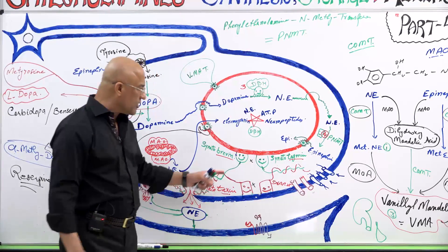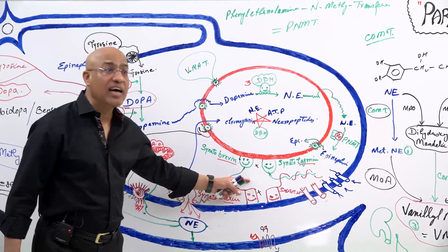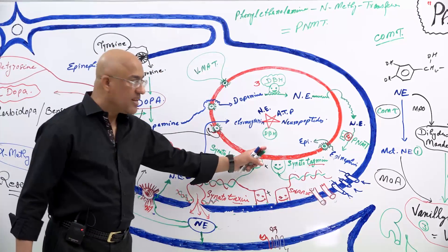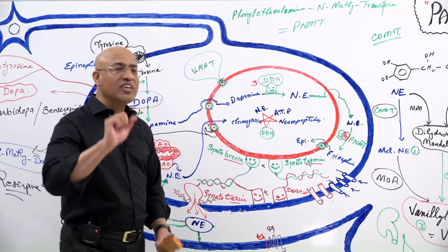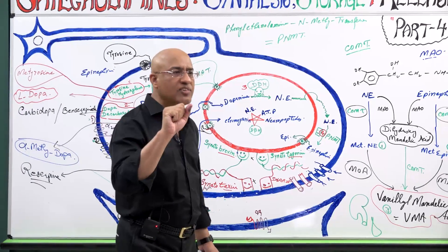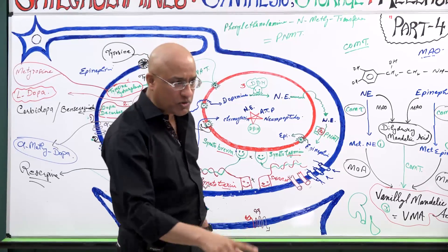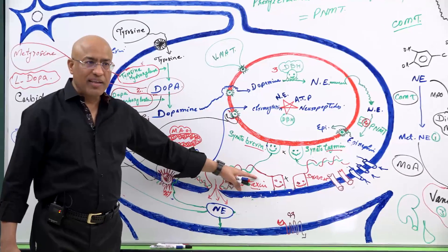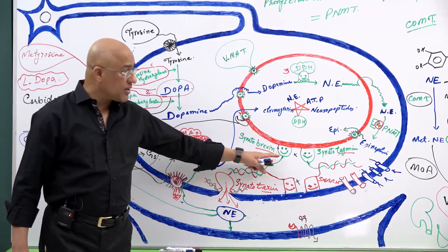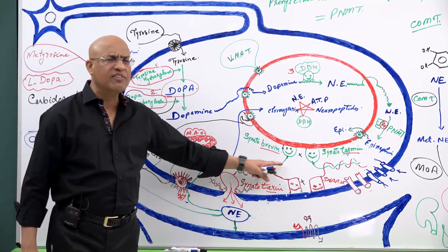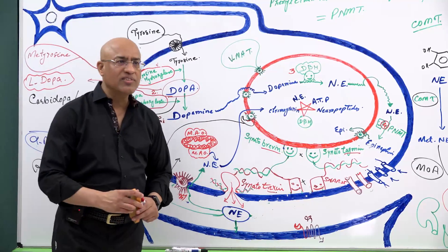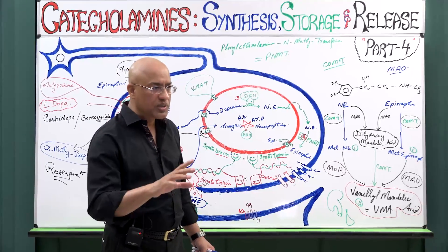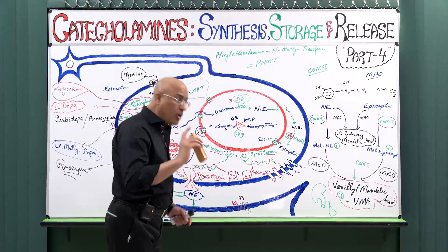There are two very important toxins which catabolize the SNARE proteins. If SNARE proteins are catabolized, vesicles cannot release their content, so neurotransmission will fail due to dysfunction of the presynaptic membrane exocytosis process. Once these toxins enter into nerve endings, they do proteolysis of SNARE proteins, resulting in failure of exocytosis and failure of neurotransmission.